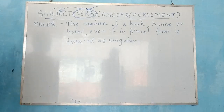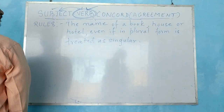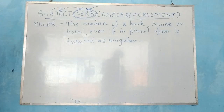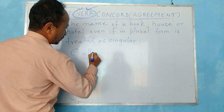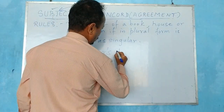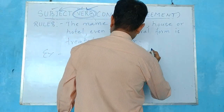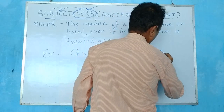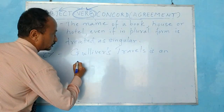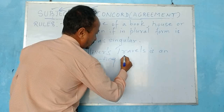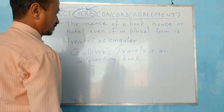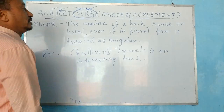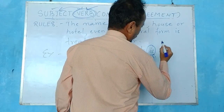Rule number eight: the name of a book, house, or place, even though it may be plural in form, is treated as singular. For example, 'Gulliver's Travels' — though the name is plural, the verb is singular. It's a singular verb here.